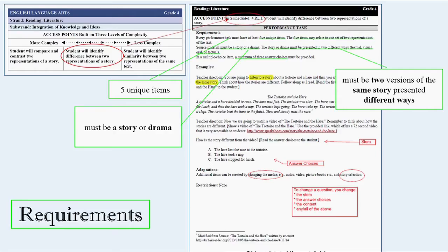Requirements tell me what has to happen. Five unique items that always happens. Two versions of the same story presented in different ways. Must be a story or drama because it's literature. That's it, right?